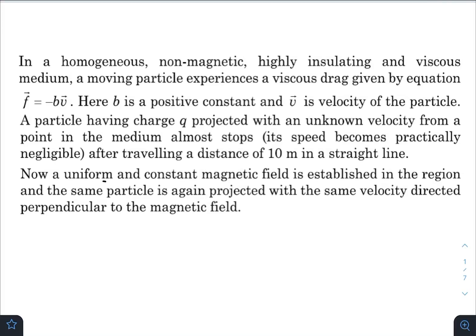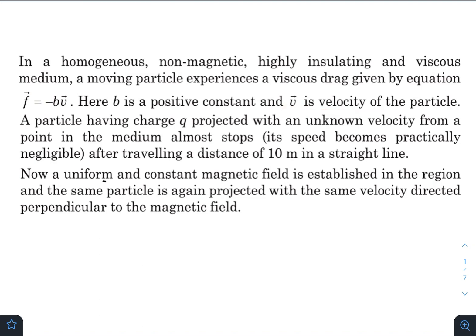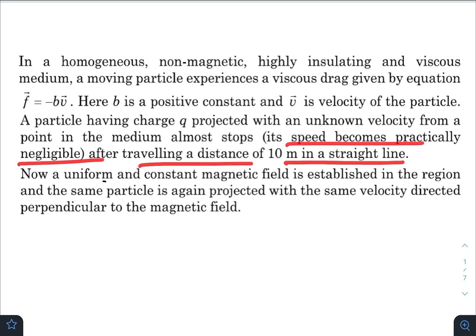Hey, what is up everyone? I hope all of you are doing great. In today's question, in a homogeneous, non-magnetic, highly insulating and viscous medium, a moving particle experiences a viscous drag given by an equation where the frictional force is directly proportional to the velocity and directed opposite to it. B is a positive constant and V is the velocity of the particle. A particle having charge Q is projected with an unknown velocity and almost stops after travelling a distance of 10 meters in a straight line.